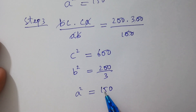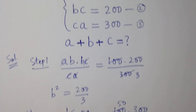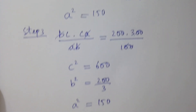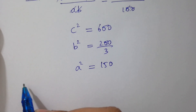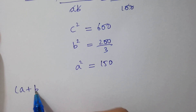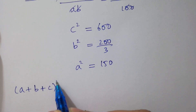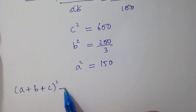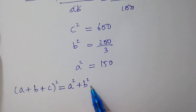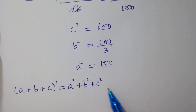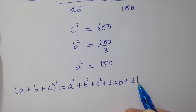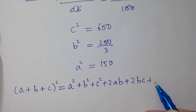To find the value of a plus b plus c, we know that (a + b + c)² = a² + b² + c² + 2ab + 2bc + 2ca.